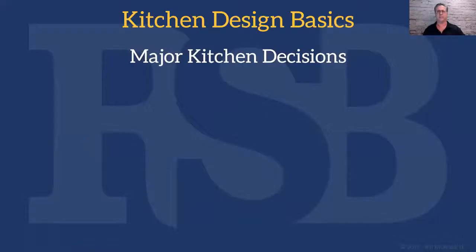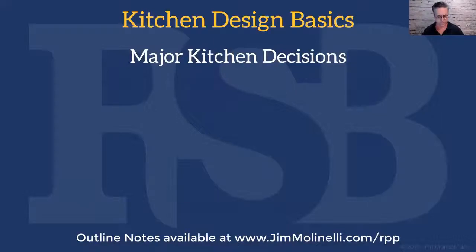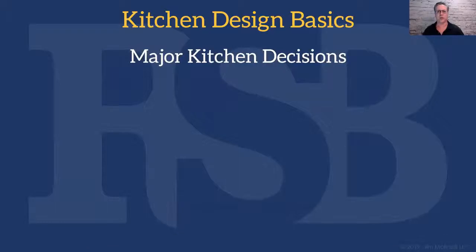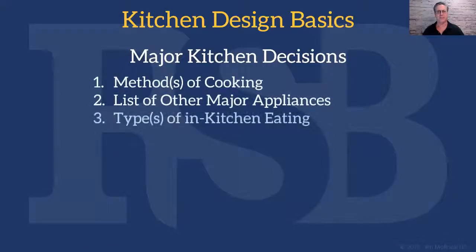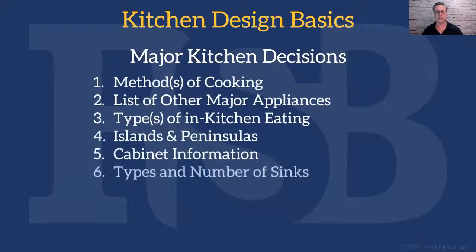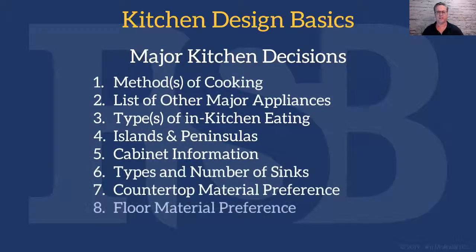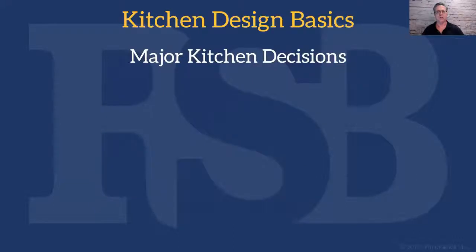Kitchen design basics: there are some major kitchen decisions, and on the notes if you get the outline you'll see all eight of them listed along with a couple of minor points. We're going to cover eight points tonight. They include the method of cooking, a list of major appliances, the type or types of kitchen eating, islands and peninsulas, cabinet information, types and number of sinks, countertop material preference, and floor material preference.